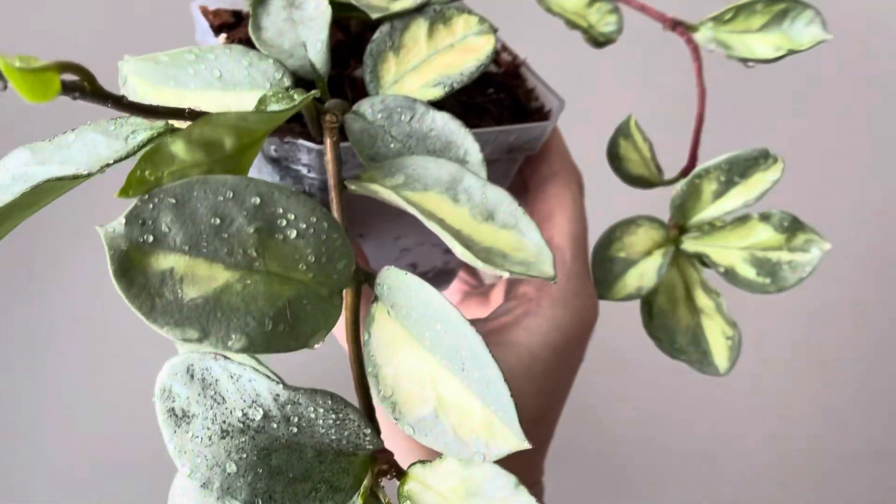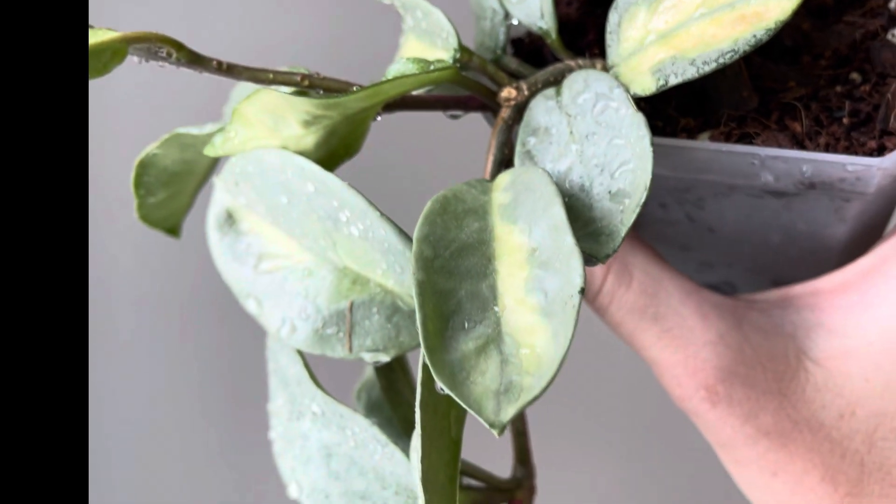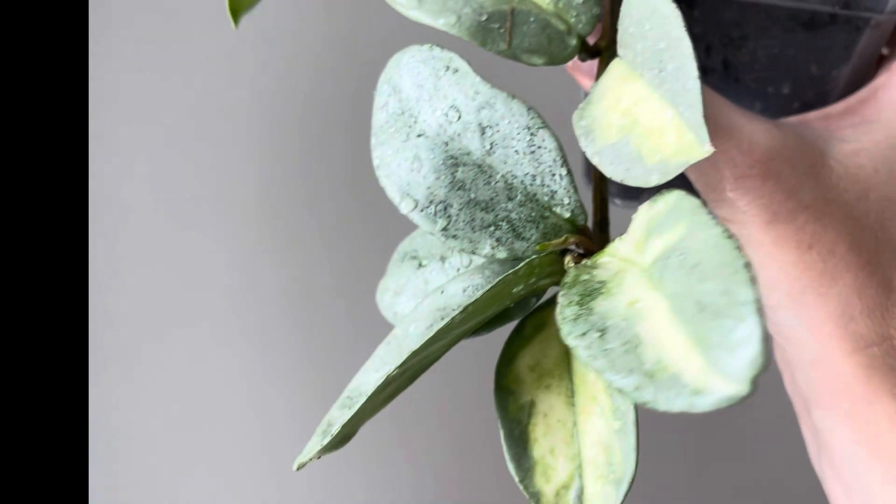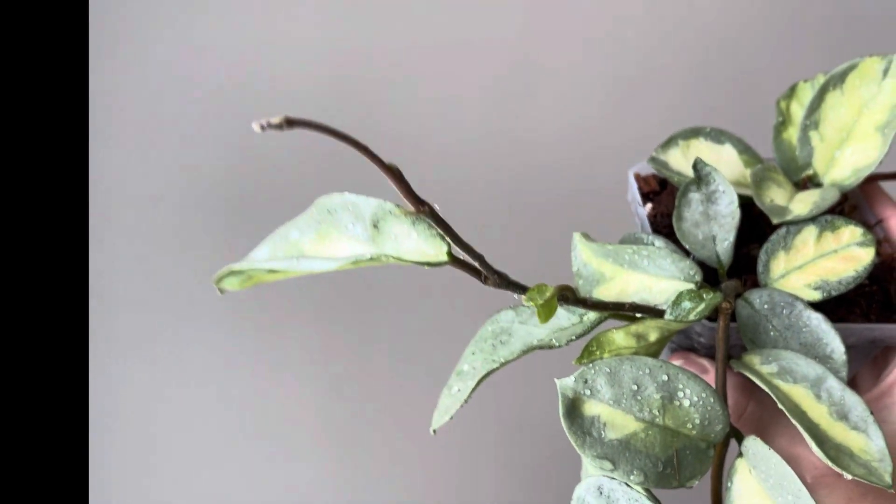And this original vine started out more pink like that and then as I cut it, it started producing less variegation. That is fine because I can get it to come back with more cutting.